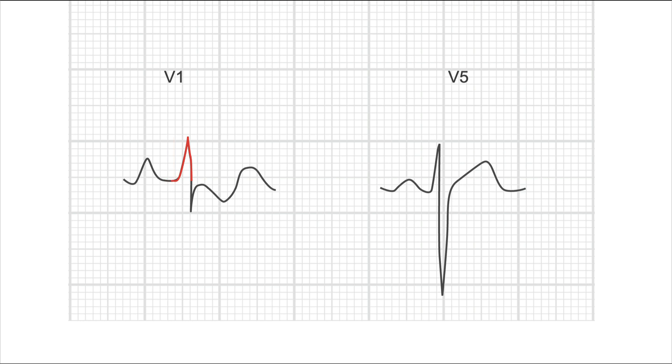Next, let's look at the R to S ratio in V1. Is the R taller than the S? Yeah, definitely. The R is taller. So, the R to S ratio in V1 is above 1. So, RSS criteria number 2 is also positive.